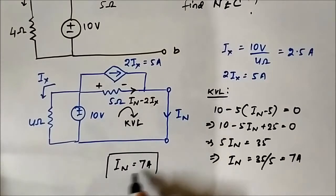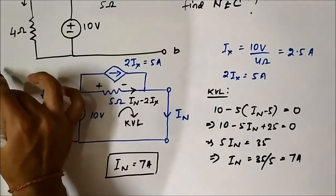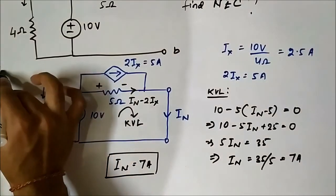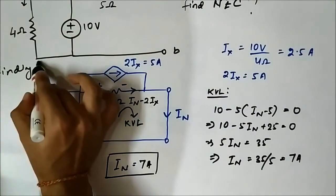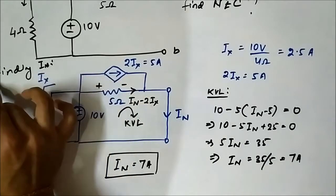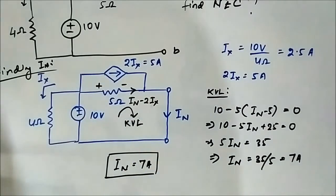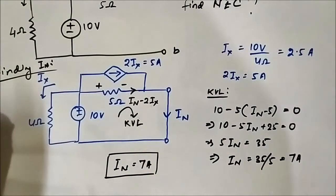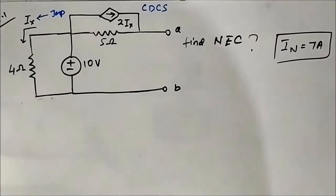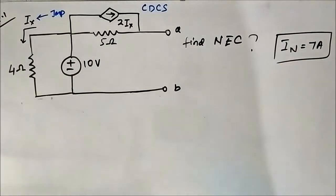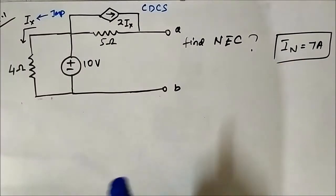The Norton current IN equals 7 ampere — that step is done. Now we have to determine the Norton equivalent resistance RN.